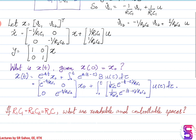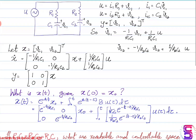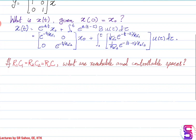Now I raise the question: if R1C1 equals R2C2, equal to some RC, then essentially the two branches of the RC network have the same time constant. If that is the case, what are the reachable and controllable spaces for this particular circuit?